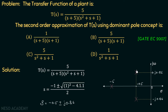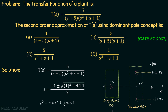Taking the ratio of the position of the pole at s = −5 to that of the complex conjugate poles at −0.5, we get |−5 / −0.5| = 10, which is definitely greater than 4. Therefore, we can say the complex conjugate poles are the dominant poles and the pole at s = −5 is the insignificant pole.